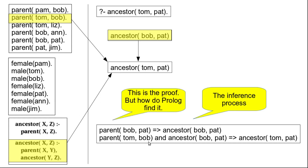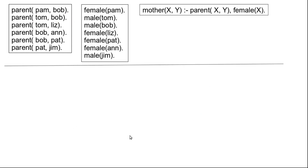This is the proof of our goal. This inference process is the proof for satisfying this goal. How exactly Prolog finds this proof we will discuss in the next class. Now we'll look at another example which is about the mother relation — this discussion may be similar to something we had already discussed in one of the earlier classes.